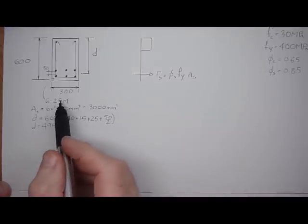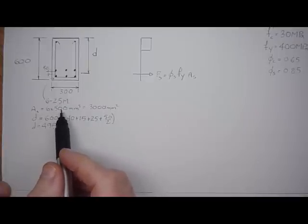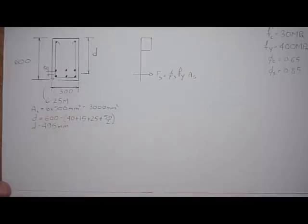And the steel, incidentally, is 25M, 6 by 25M, 125M bars, 500 millimeters squared. 6 times 500, 3000 millimeters squared. So these six bars have a combined area of 3000 millimeters squared.